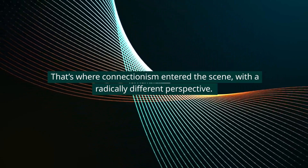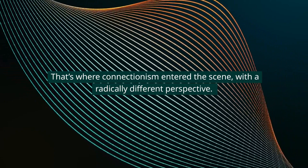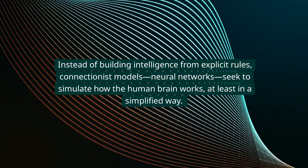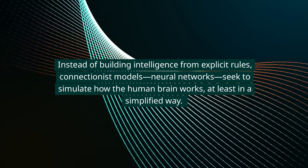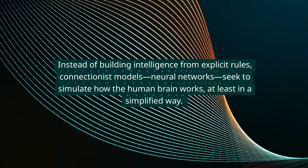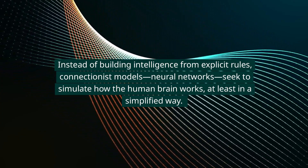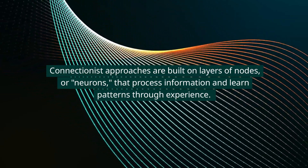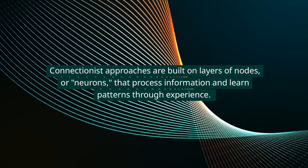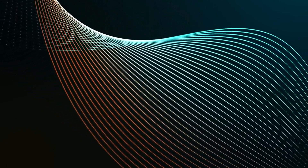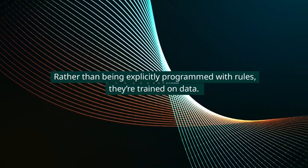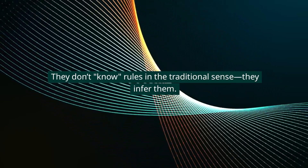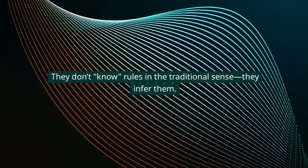That's where connectionism entered the scene with a radically different perspective. Instead of building intelligence from explicit rules, connectionist models — neural networks — seek to simulate how the human brain works, at least in a simplified way. Connectionist approaches are built on layers of nodes, or neurons, that process information and learn patterns through experience. Rather than being explicitly programmed with rules, they're trained on data. They don't know rules in the traditional sense — they infer them.